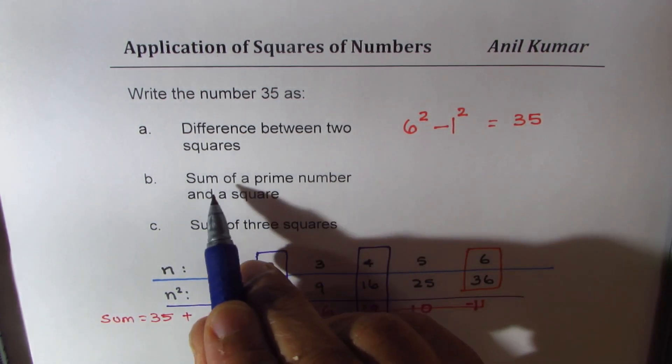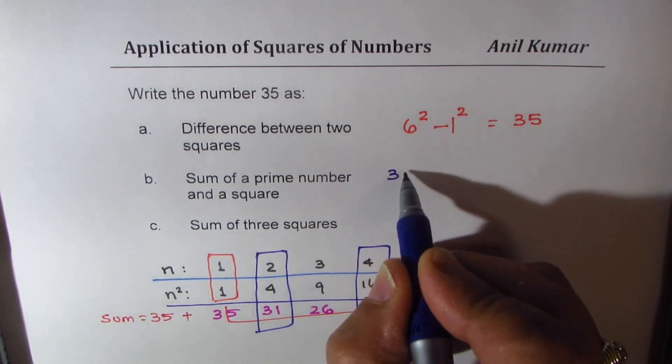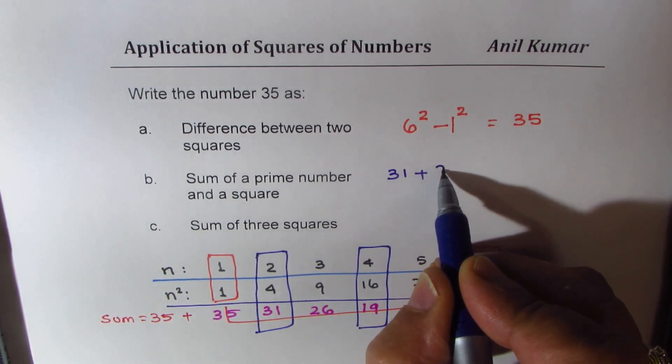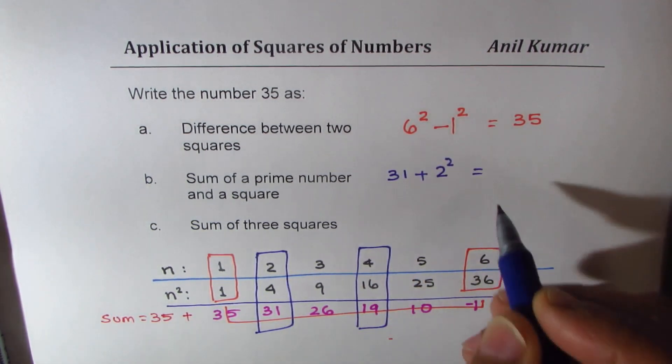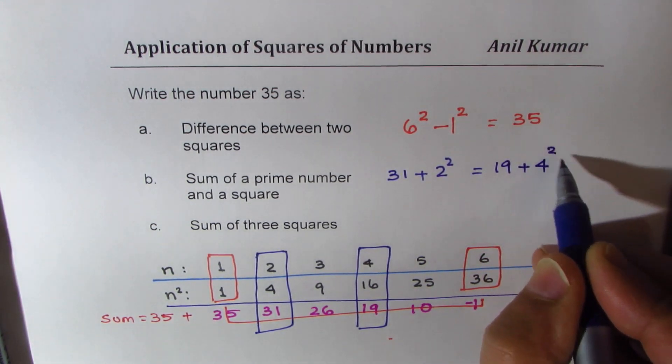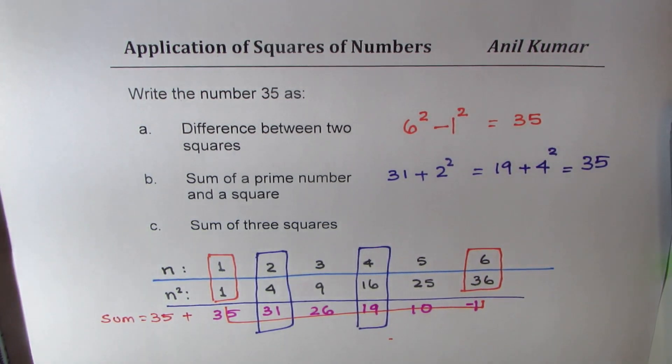We could write prime number and a square. So, prime number is 31 plus square of 2. That is also equal to prime number 19 plus 4 square. Both are 35. That could be another solution. So, we got two of them.